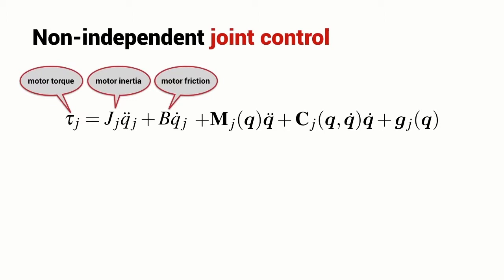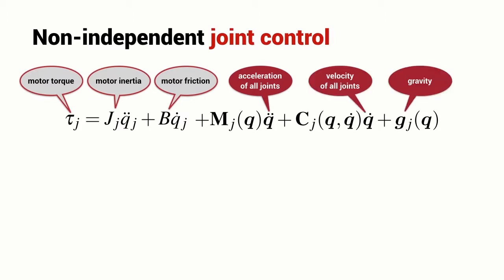What this means is that the torque seen by the motor on joint J is going to be influenced by the acceleration of all of the joints, the velocity of all of the joints and gravity. Now, I've introduced a bit of additional notation here. It's the subscript J and what that means is the Jth row of the corresponding matrix. So, this is the Jth row of the matrix M, Jth row of the matrix C or the Jth element of the vector G.